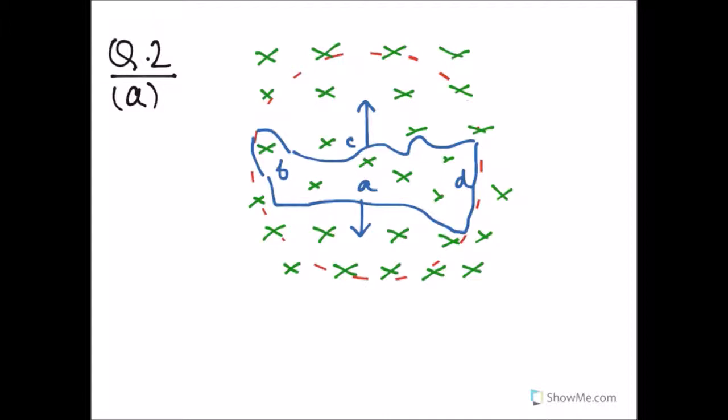The part A of question 2 says that using Lenz's law we need to find the direction of current in the coil once the coil is stretched from the irregular shape to form a circle.